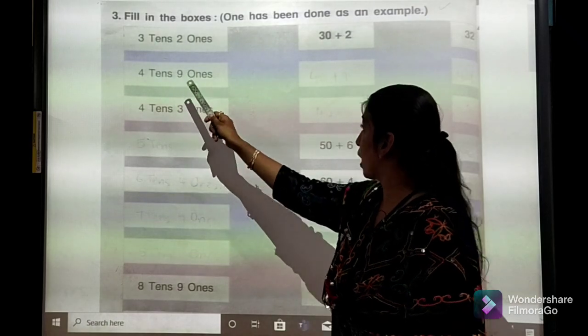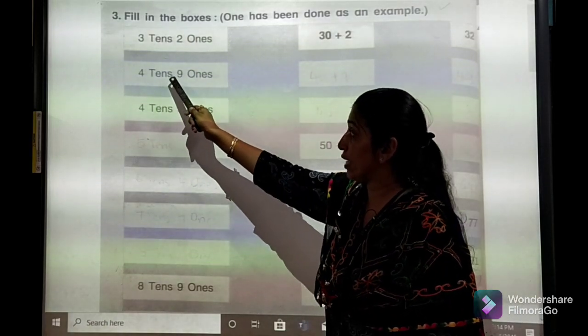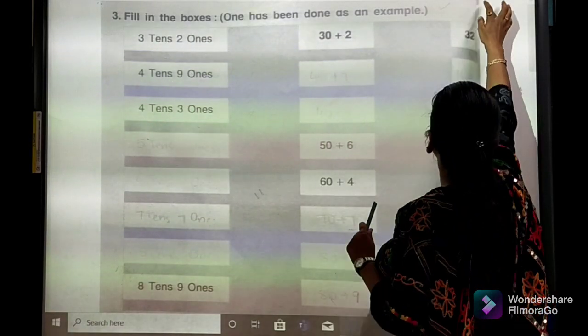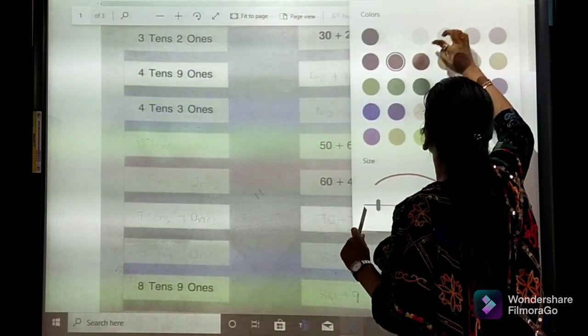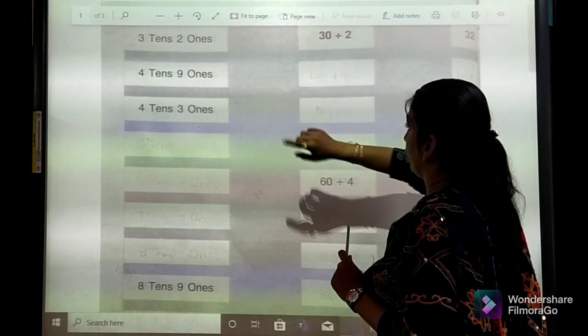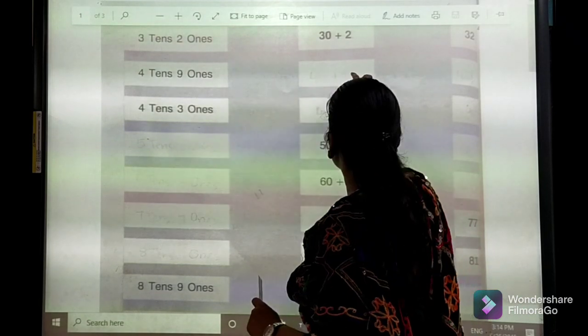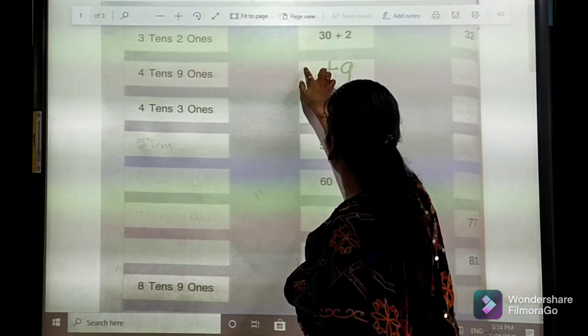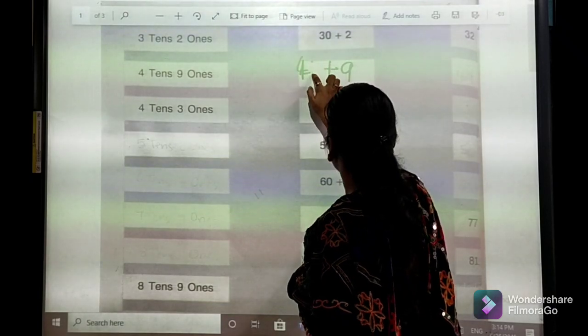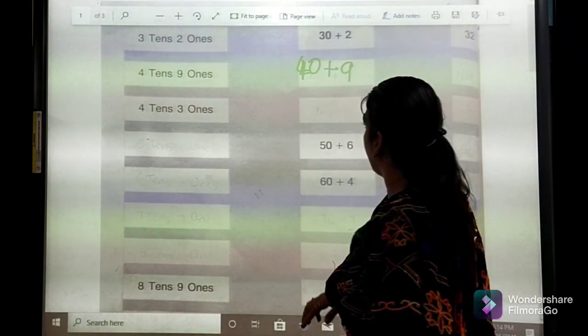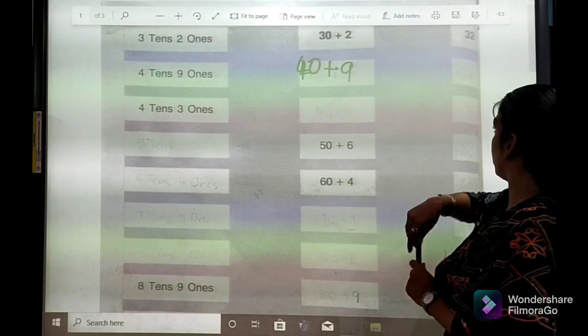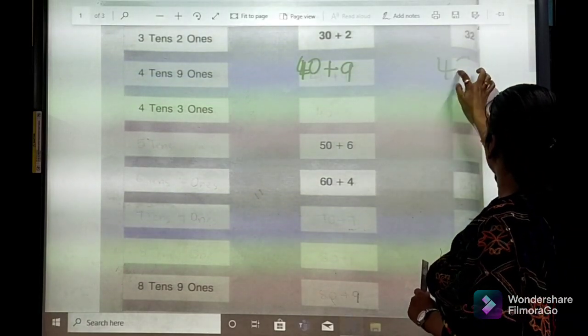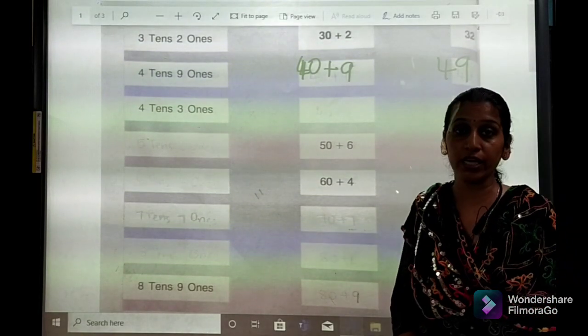One more example we will do 4 tens, 9 ones. 9 is at the case of 1s, plus, and 4 is at the case of 10s, so means, 40. Now, 40 plus 9 will be 49.